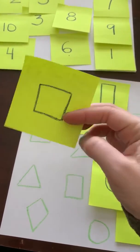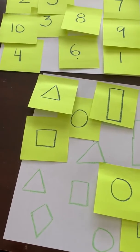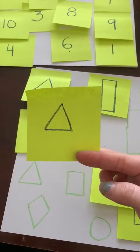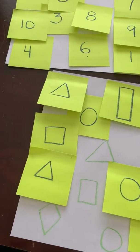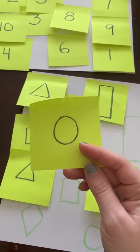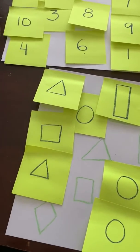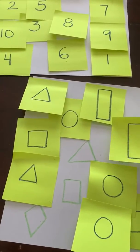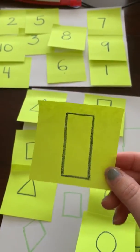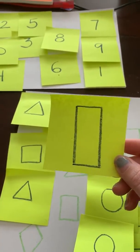Next, square. Triangle. Circle. Oh, Mrs. B, silly. This isn't a square. This is a rectangle.